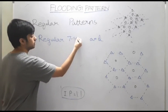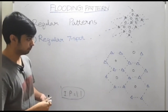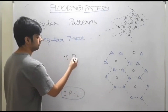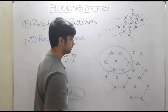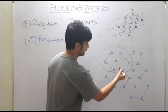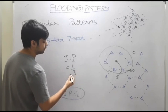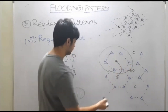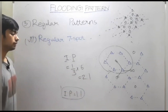Now let us talk about the regular seven-spot pattern. You can calculate the injector-to-producer ratio: all surrounding wells form one unit. When you consider one injector well, it is injecting water into three different wells. One injector well is shared between three producer wells, and the number of injector wells in one unit is six.